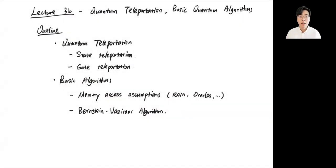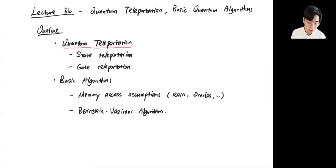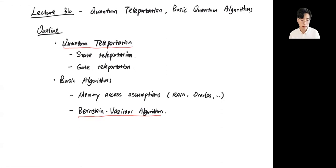Welcome back to lecture 3b of quantum computer systems. Today we're going to use what we learned from previous lectures about quantum gates and quantum circuits and talk about useful applications. In particular, we're going to look at two examples, namely quantum teleportation and a basic quantum algorithm called Bernstein-Vazirani. These are great examples where we use properties like superposition and entanglement to realize computation.